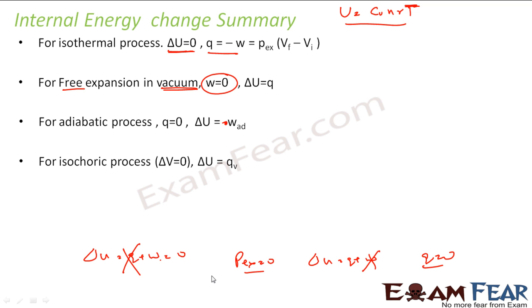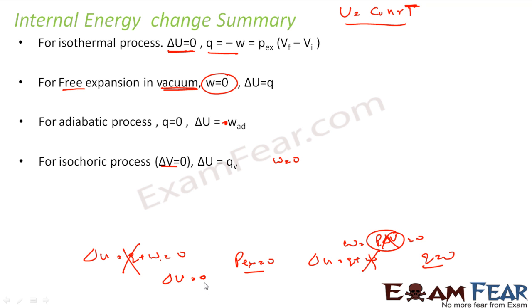For an isochoric process, there is no change in volume. Work done = P times delta V, and since delta V = 0, work done is zero. So delta U = Q + 0 = Q. The change in internal energy equals the heat supplied.